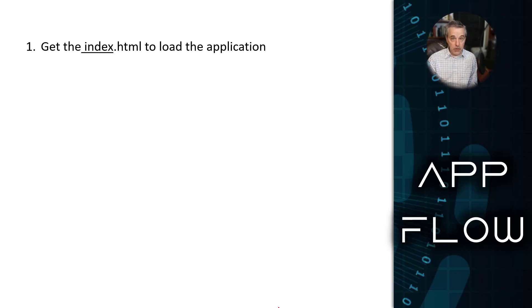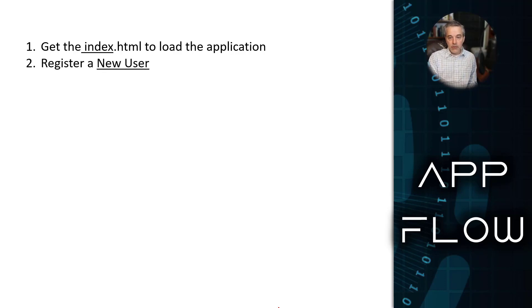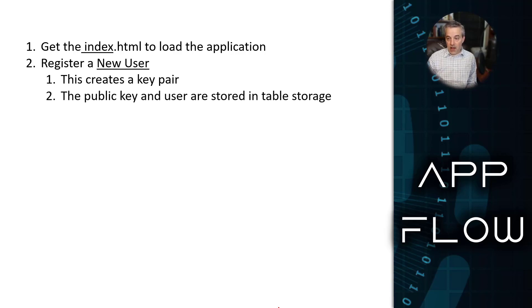The app calls a function called `index` to return the contents of `index.html`, just using static files to serve up the client. Once the app is in the browser, the user types in a username — that username is how the user will be identified on the PubSub service. They click Start Chat, which calls an endpoint to register the new user. That new user function stores the public and private key locally, and also stores the public key in a storage table as a key-value pair with the username, making it available to all other users on the hub.